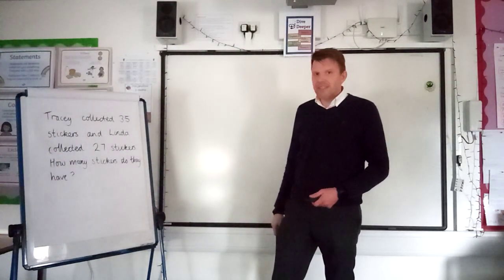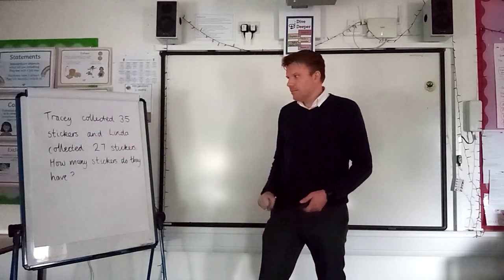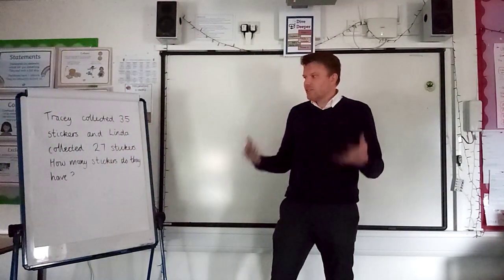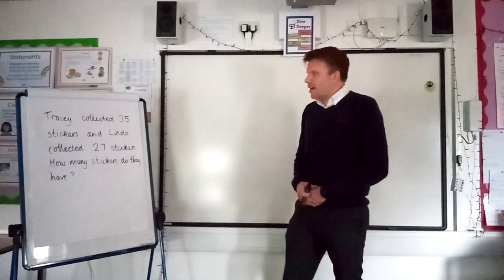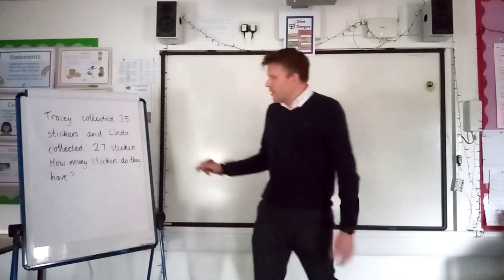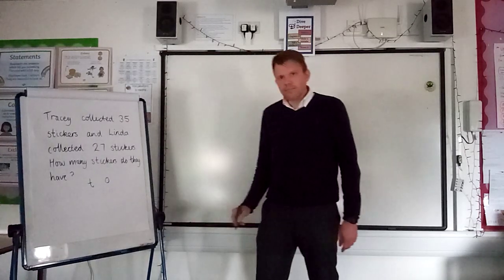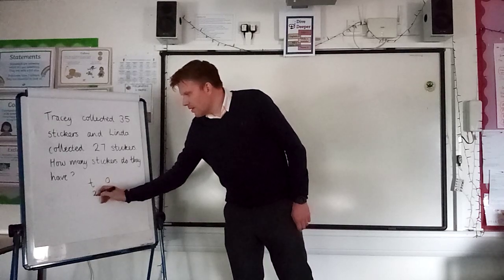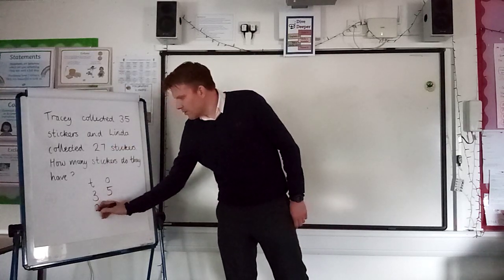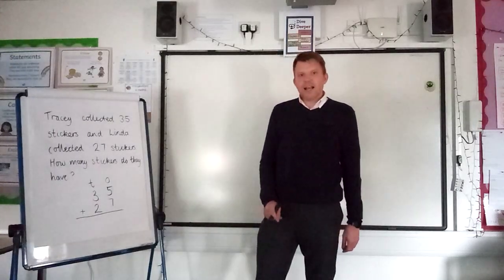Oh, I've got my friend Tracy now. Hello, Tracy! Tracy collected thirty-five stickers, and Linda, her friend, collected twenty-seven stickers. How many stickers do they have all together? Right, I've got two numbers that I need to add together for that one, because it's the total number of stickers. So, remember what we do? We put our different columns. I've got my ones column and I've got my tens column. I'm going to put thirty-five, it's got three tens, five ones, and twenty-seven has two tens and seven ones, and I'm adding them. Can you see how you do that column addition?